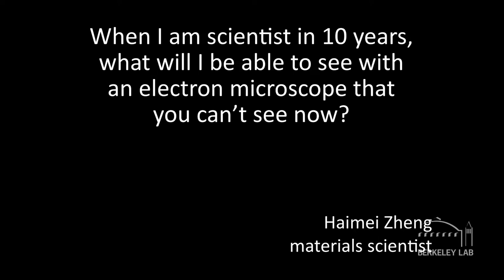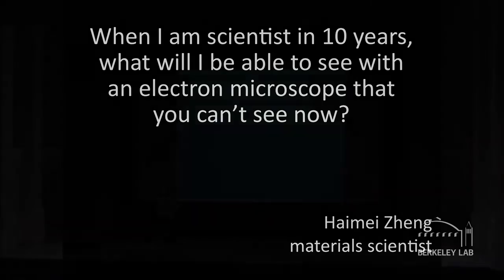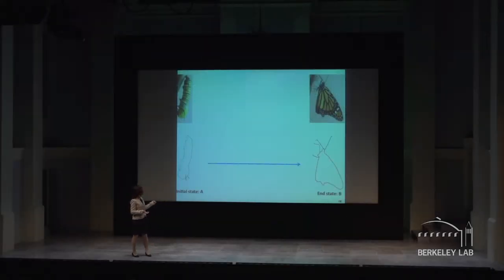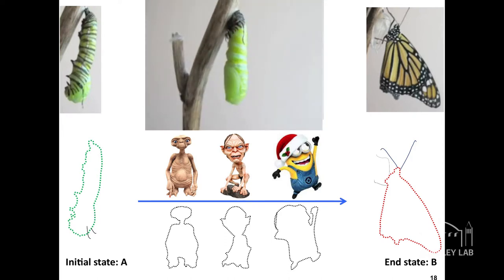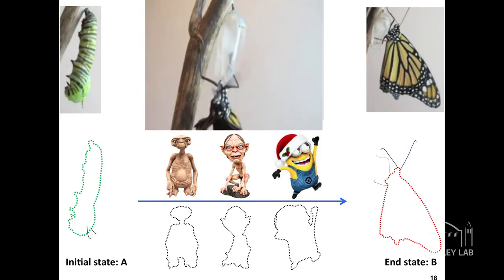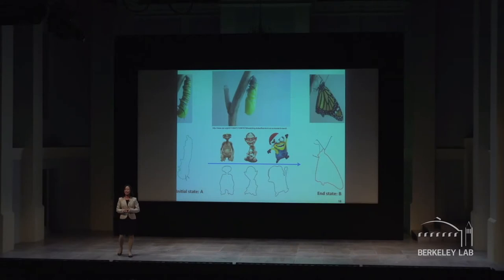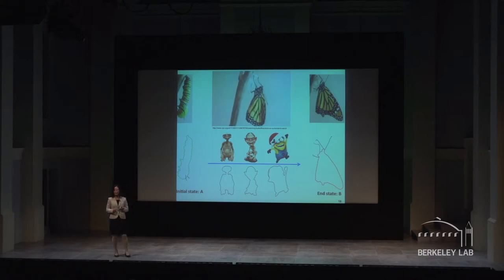In nature, how does the caterpillar transform to a butterfly? We can make a guess based on the initial state and end state, but our speculation can be terribly wrong. However, if we watch the dynamic processes directly, there is no ambiguity. In material science, there are full of processes that involve materials transforming from one state to another. To understand those problems, including the materials properties, it is important we study the materials transformations directly, by direct observation.